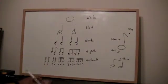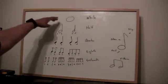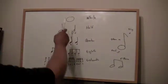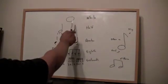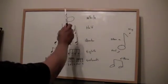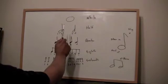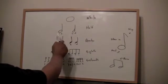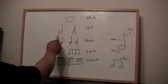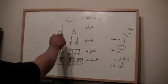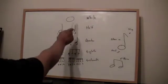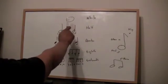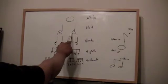Now with the rhythm tree, it starts here with the whole note, which is just a circle by itself. This gets four counts. And then if you were to subdivide that into two equal pieces, you would get a half note. The half note has an empty note head with a vertical stem. So the whole note covers counts one through four, and each half note covers two counts.